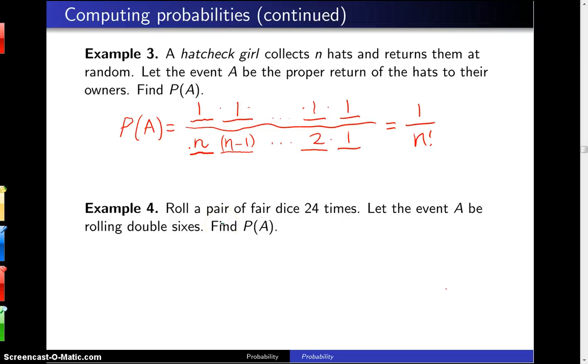Roll a pair of dice 24 times. Let the event A be rolling double sixes. Find the probability of A.